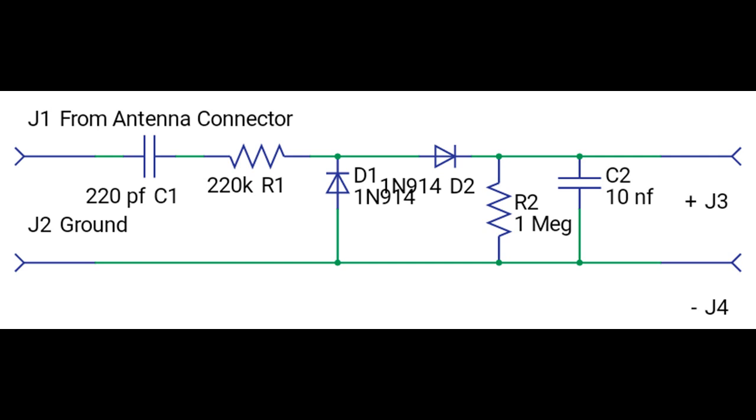After you have your antenna connected, you connect this to the same point the antenna is connected on the J1 side, ground on the other side. J3 and J4 go to a simple DC voltmeter.